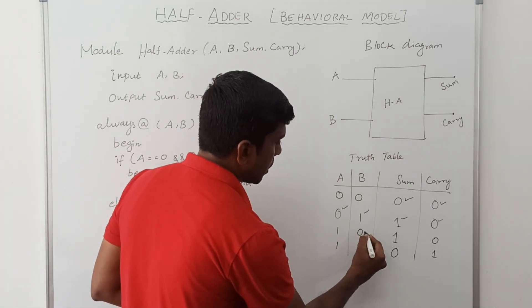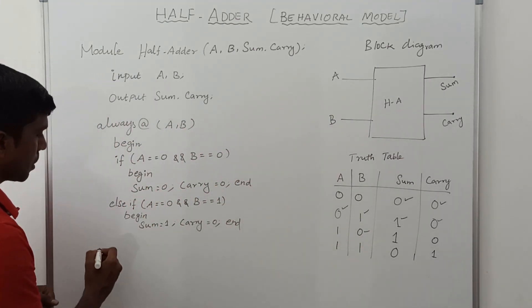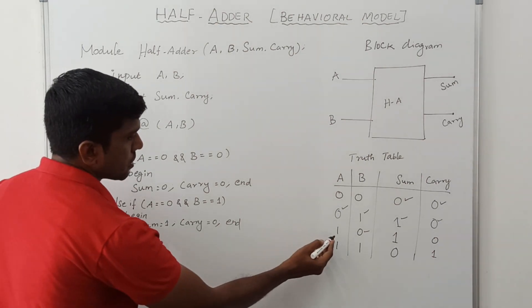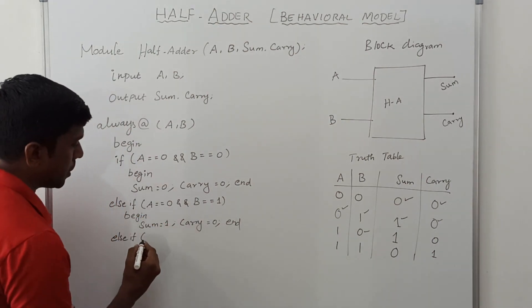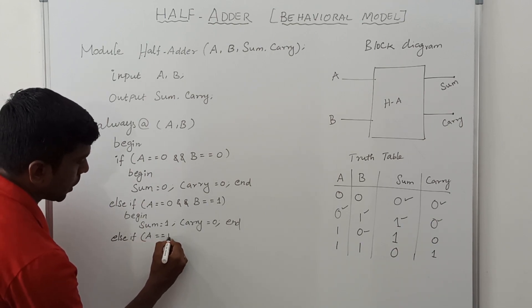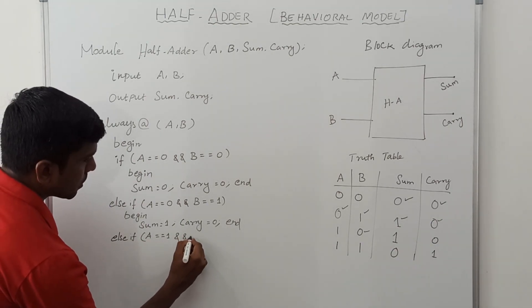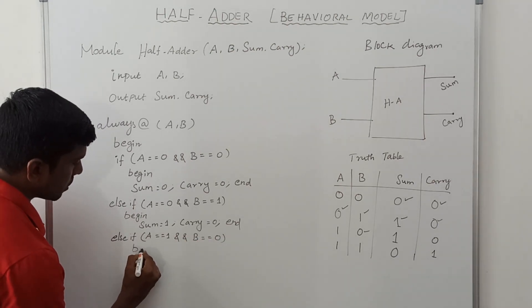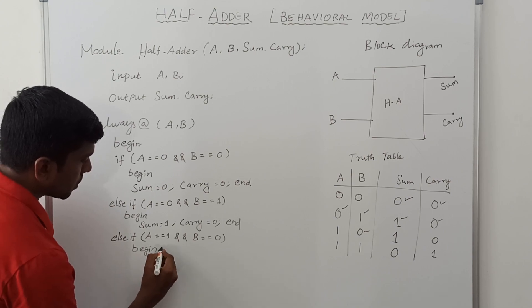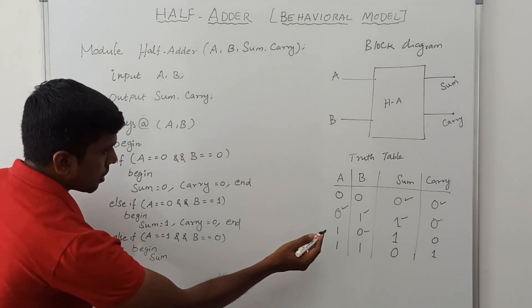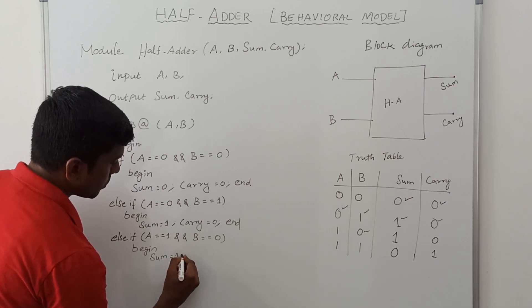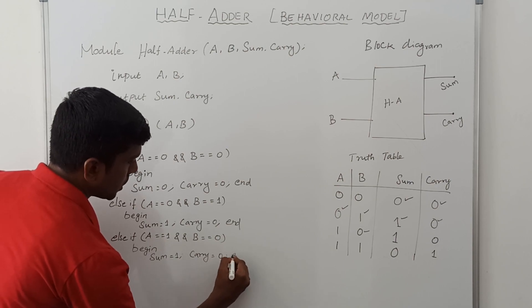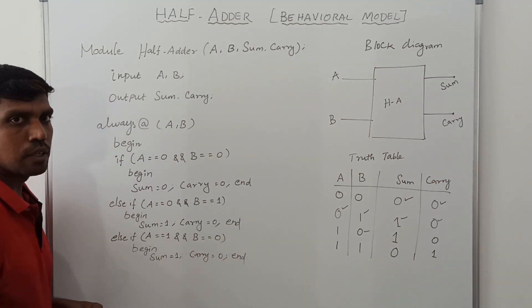Now take the third input values. Else if: A equals 1 and B equals 0. Begin the loop: sum equals 1, carry equals 0. End the loop.